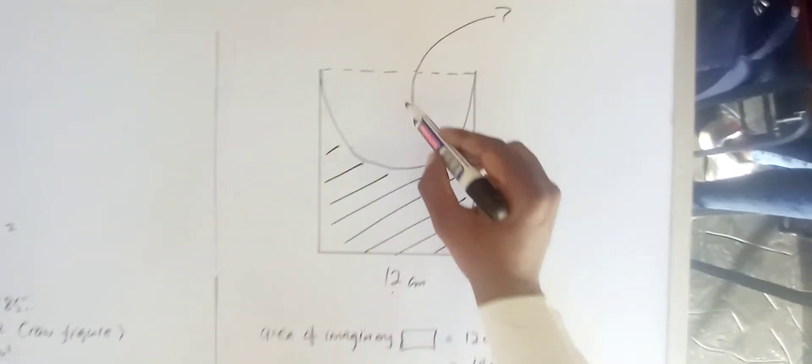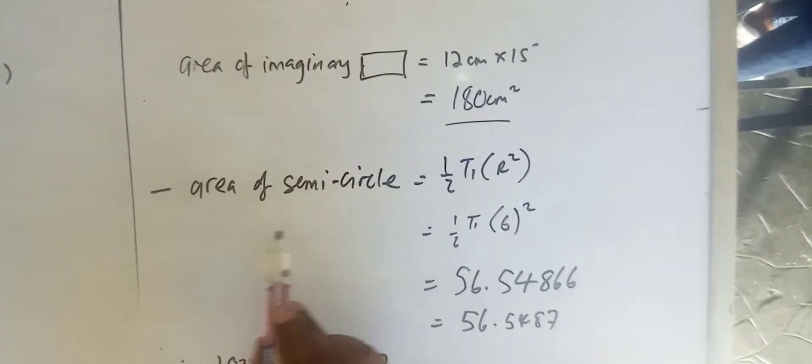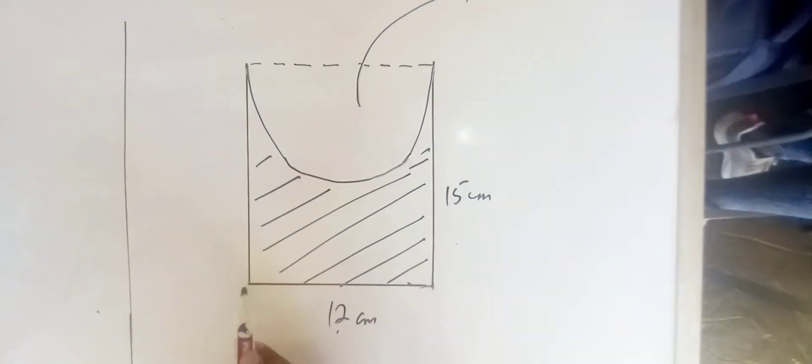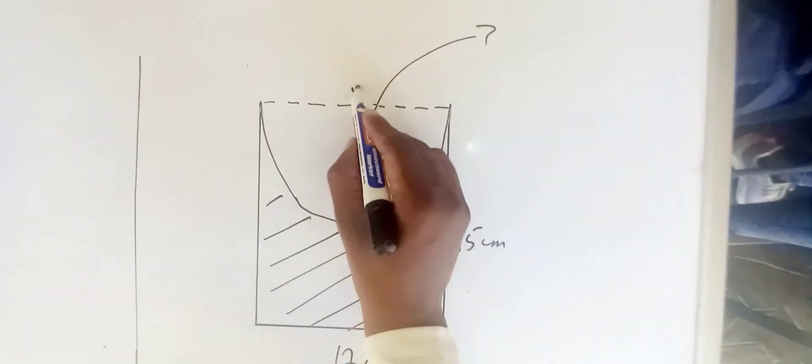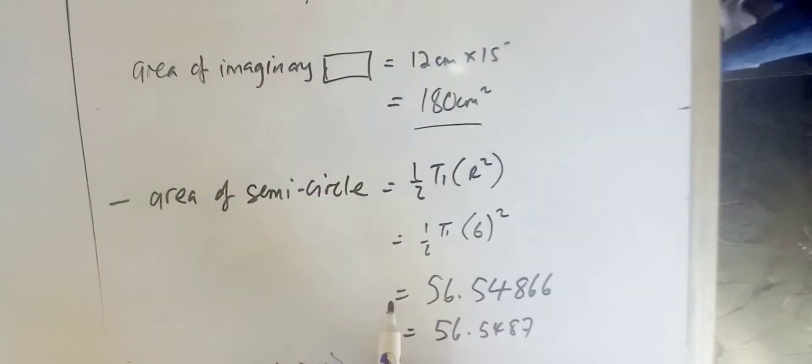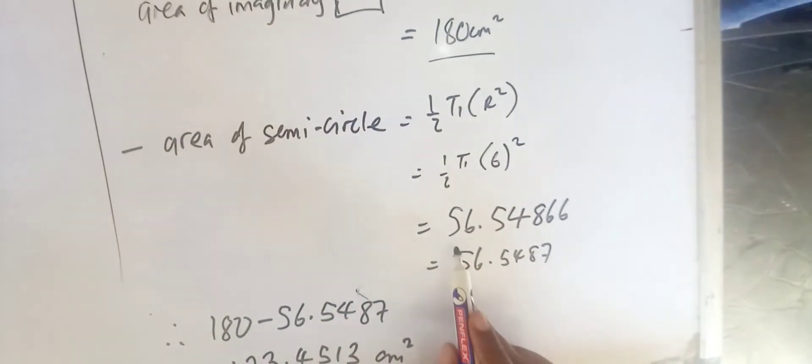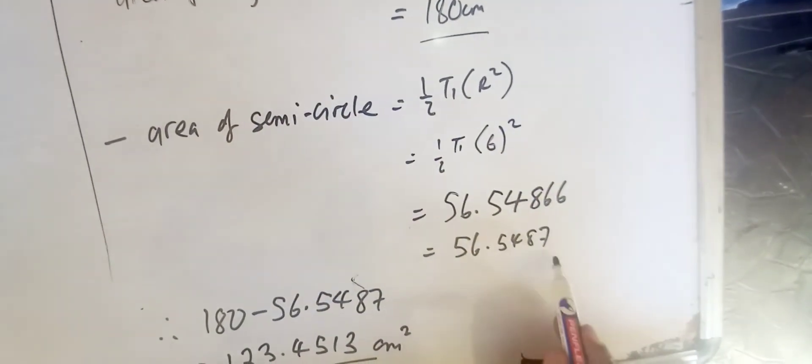In the semicircle itself that would have been cut out, we now know the area of a semicircle, which is half pi r squared. And therefore, the radius—if this length is 12, it means the radius is going to be 6. And therefore, half pi r squared, half pi 6 squared will give us this answer, which we will write to 4 decimal places.